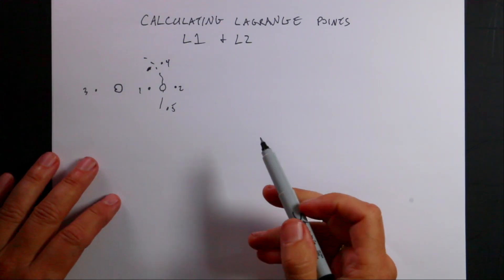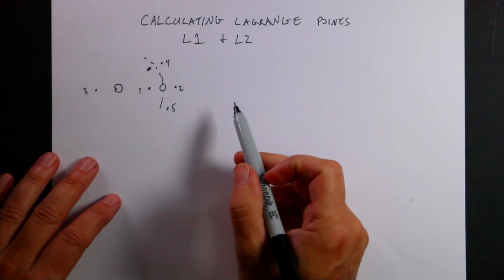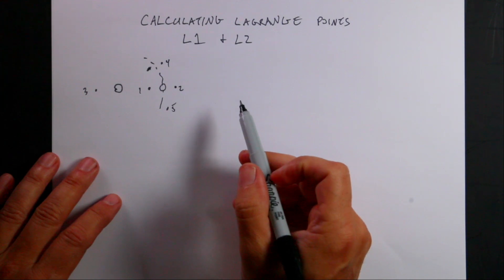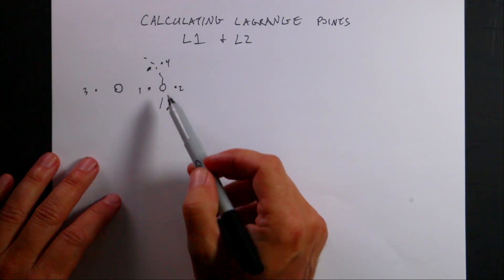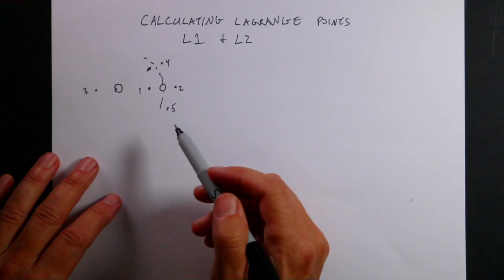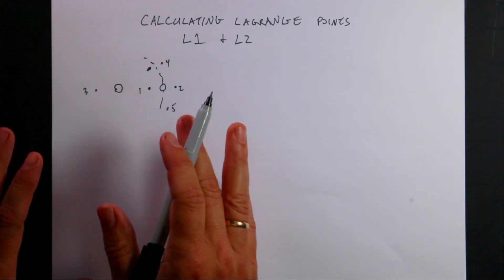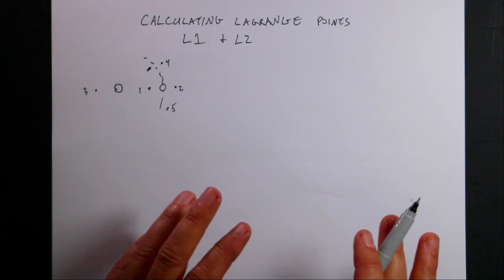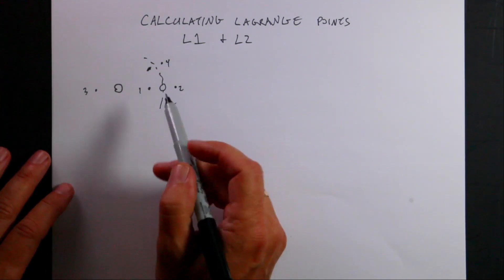Let's calculate the location of Lagrange points L1 and L2. I'm not going to do 3, 4, or 5, but I'm going to show you where these are, talk about L1 and L2, and then we'll calculate.